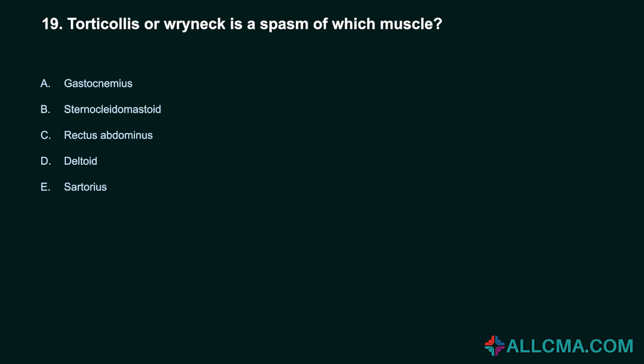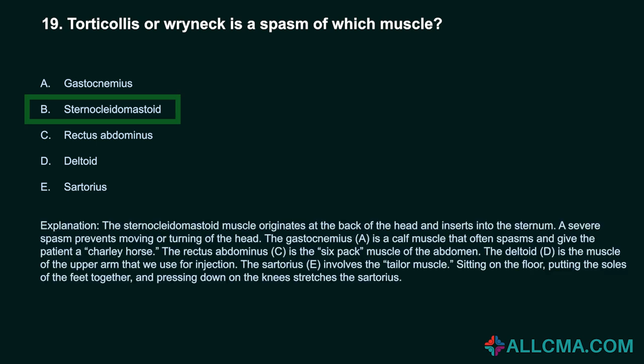Question 19: Torticollis or wryneck is a spasm of which muscle? A. Gastrocnemius. B. Sternocleidomastoid. C. Rectus abdominis. D. Deltoid. E. Sartorius. Correct answer: B. Sternocleidomastoid. The sternocleidomastoid muscle originates at the back of the head and inserts into the sternum. A severe spasm prevents moving or turning of the head. The gastrocnemius is a calf muscle that often spasms and gives the patient a charlie horse. The rectus abdominis is the six-pack muscle of the abdomen. The deltoid is the muscle of the upper arm used for injection. The sartorius is the tailor muscle.